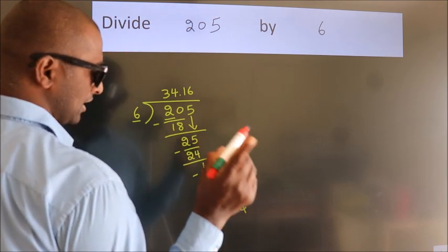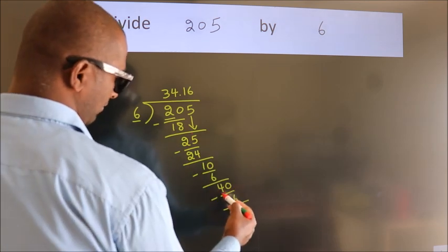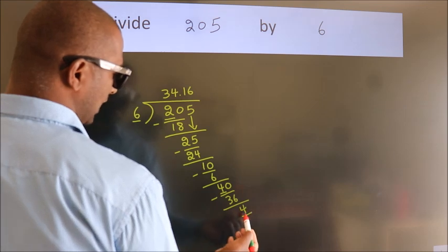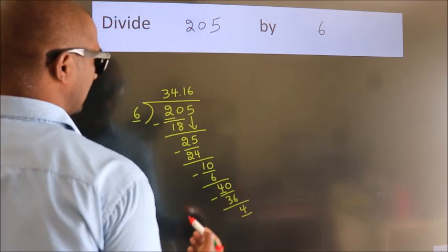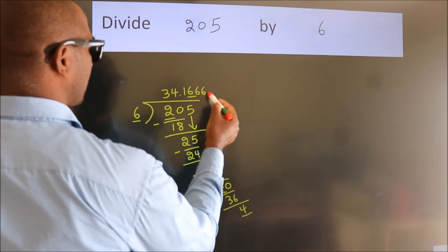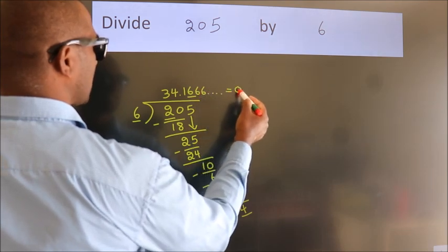Now, you observe. We had 4 here, and we got 4 again. That means this number keeps on repeating. So this is our quotient.